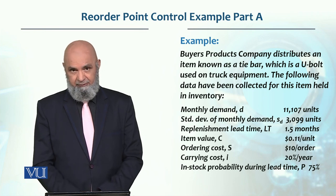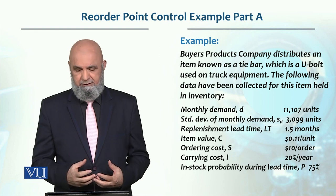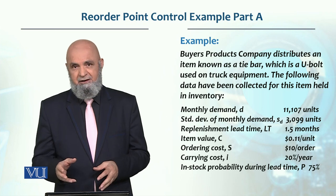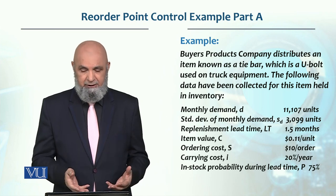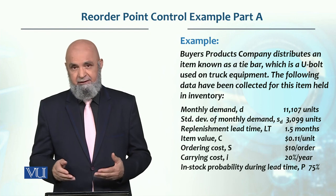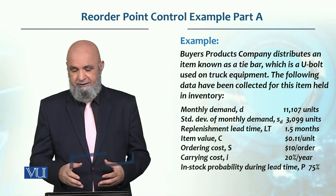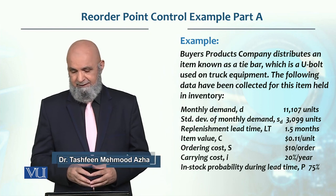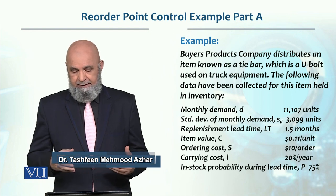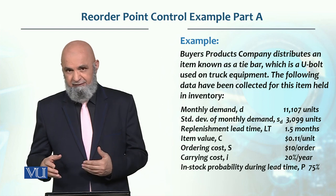Monthly demand is given. When we solve this EOQ — economic order quantity — we will multiply the monthly demand by 12 to get annual demand. That is 11,107 units per month. Standard deviation of monthly demand is 3,099 units.